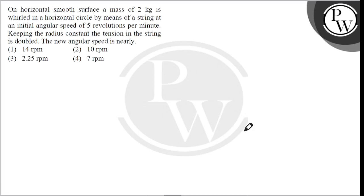Hello, let's read the question. The question says, on horizontal smooth surface, a mass of 2 kg is whirled in a horizontal circle by means of a string at an initial angular speed of 5 revolutions per minute. Keeping the radius constant, the tension in the string is doubled. The new angular speed is nearly. So,